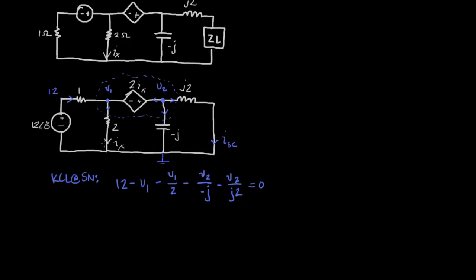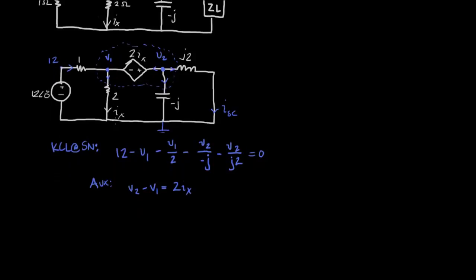Recall that when you do a super node, there is always going to be an auxiliary equation. In this case our auxiliary equation is that V2 minus V1 equals 2IX. So now we have two equations, but we have three unknowns. So we're going to need to have an additional auxiliary equation. And we want to rewrite IX in terms of V1 and V2. We can achieve that by noticing that IX is V over R. It's V1 over 2. And now we have a system of equations with three equations and three unknowns.